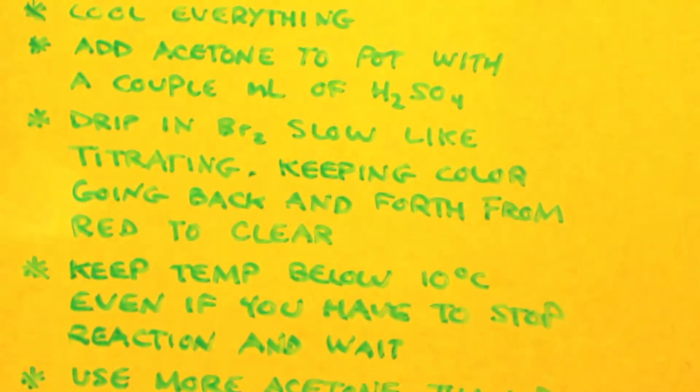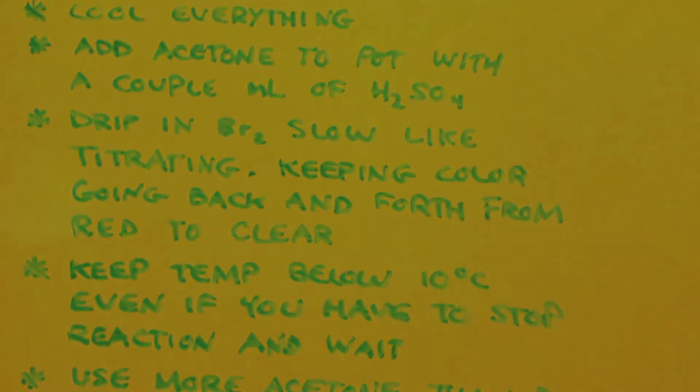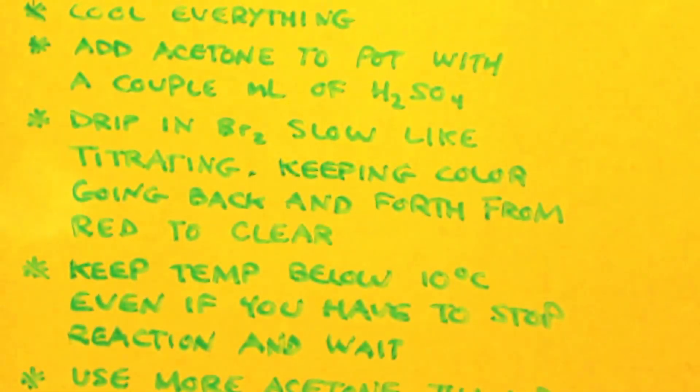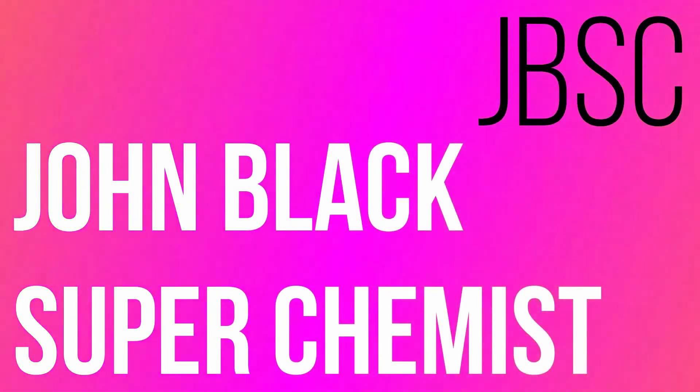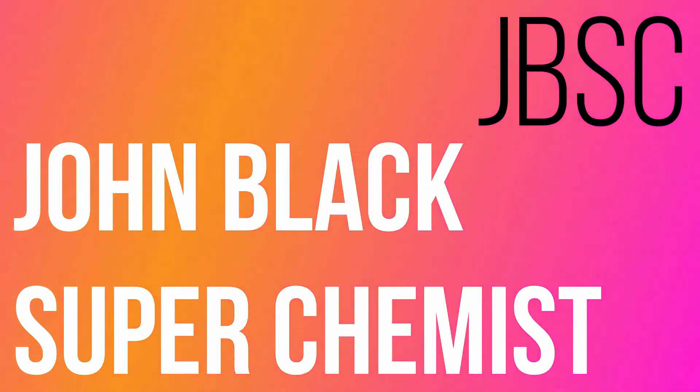Like I said, keep it below 10 Celsius. Even if you have to stop the reaction, let's say your reaction is getting to 10 degrees Celsius, then you stop putting the bromine in. You wait, wait for the pot to cool back down. This is a one-to-one ratio on the bromine and the acetone, but I would probably put in more acetone than bromine. The reason why is because you might have the bromine, it can only attach one time. This is a one-to-one ratio.